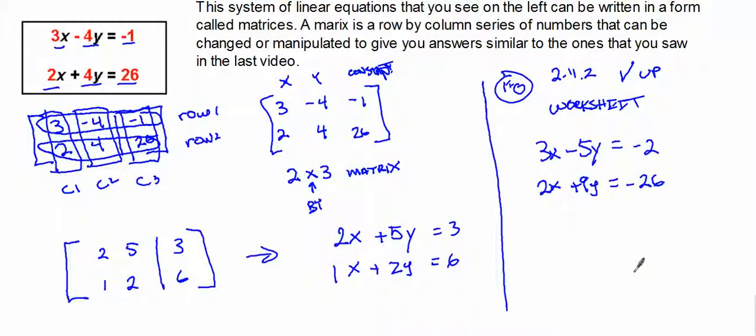So this can simply be turned into the matrix 3, negative 5, negative 2, and we have 2, 9, and negative 26. Boom, you're done.